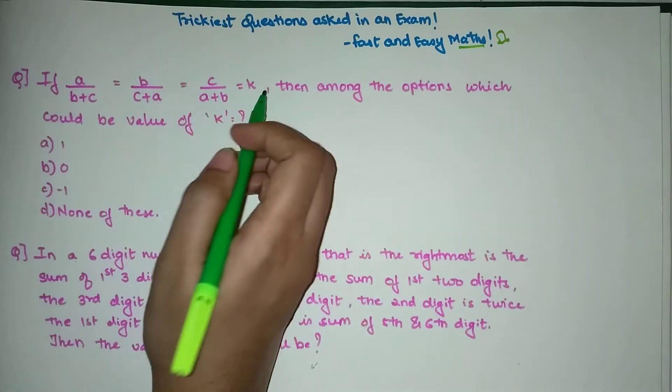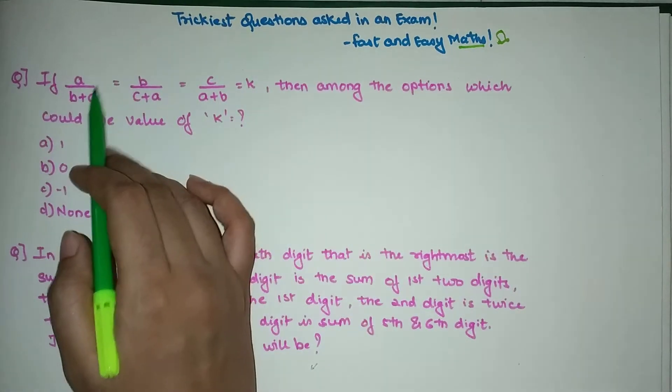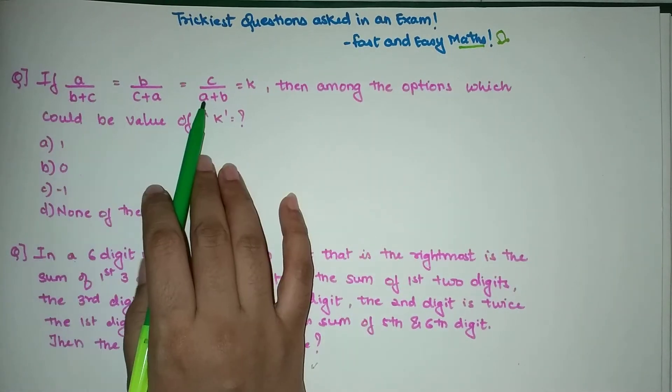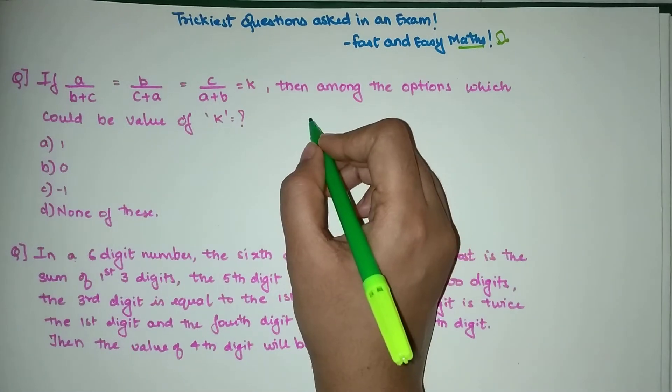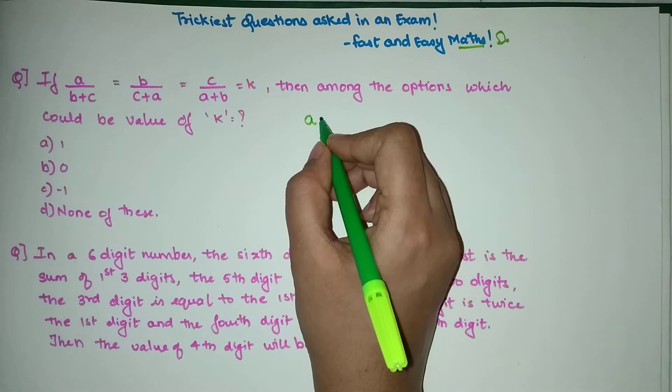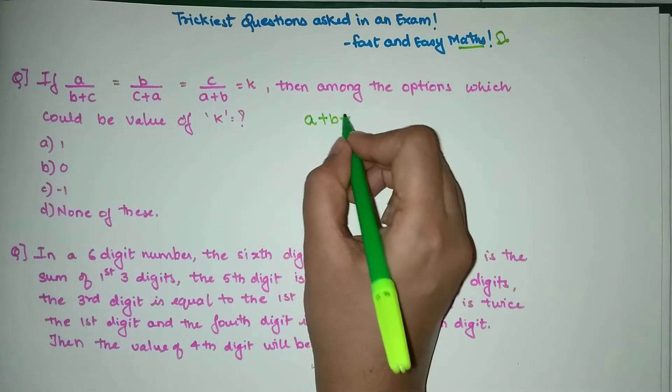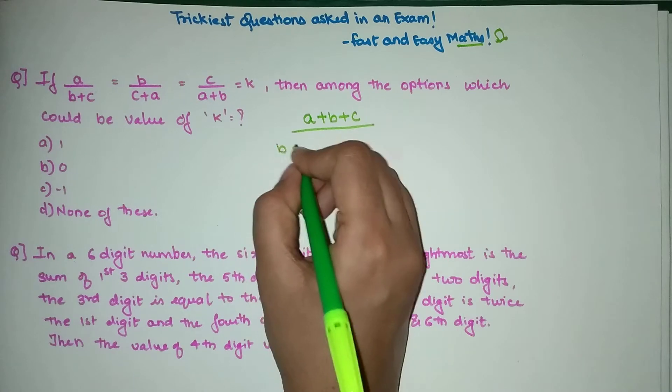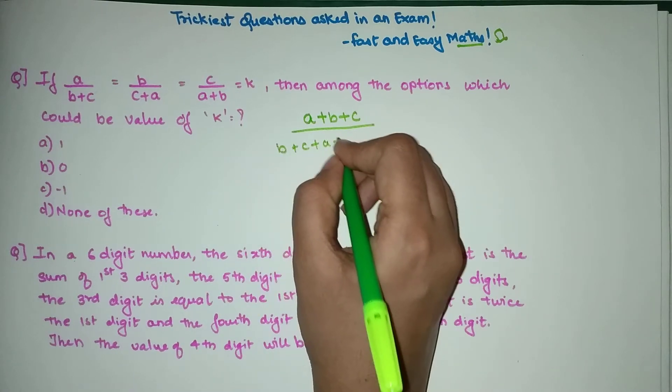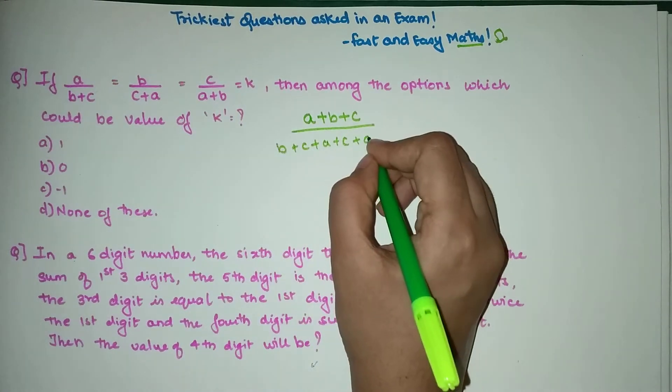As we know, these are nothing but ratios, so you can directly add them. When you add, you have (A+B+C)/(B+C+A+C+A+B).